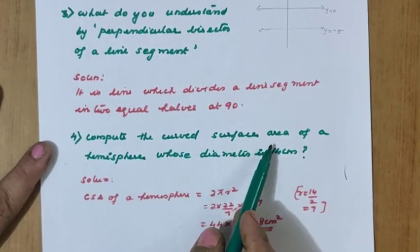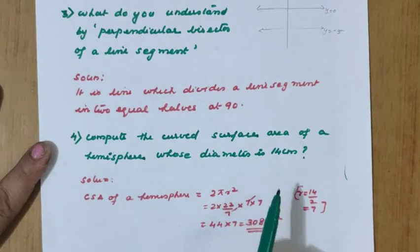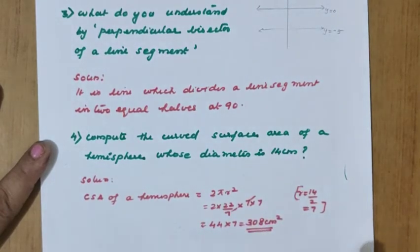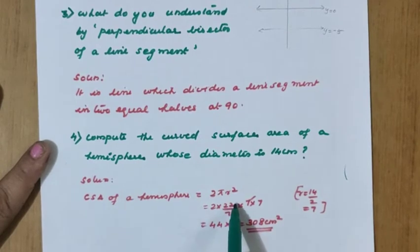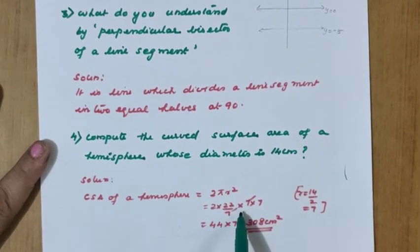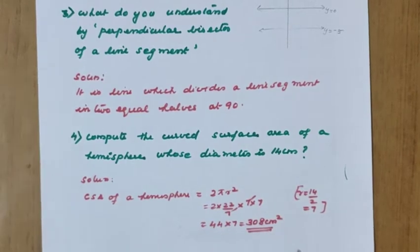Compute the curved surface area of the hemisphere whose diameter is 14 cm. Since it is a one mark question, there is no need of much explanation. We have to write r equal to 14 by 2, which is equal to 7 cm. CSA of the hemisphere is equal to 2πr². Substituting, 7 will get cancelled, so the final answer is 308 cm².